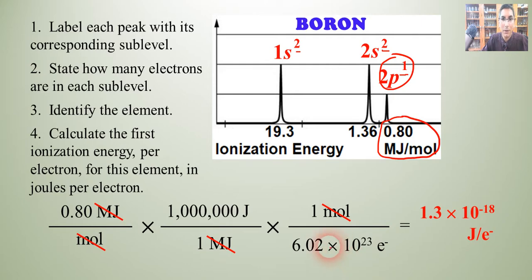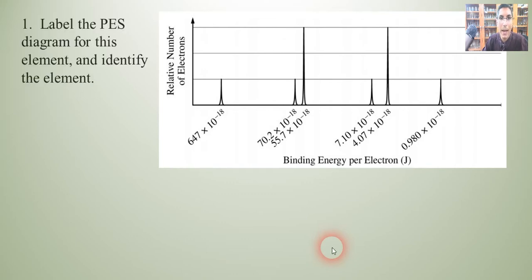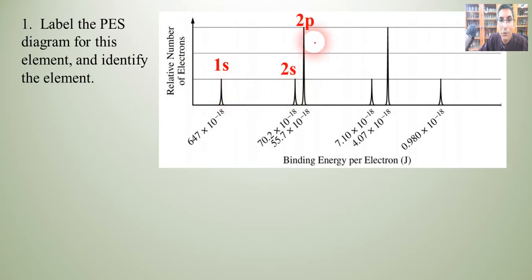Let's take a look at another example. We're going to look at this PES diagram. The first question asks us to label the PES diagram and identify the element. We progress from left to right: the first peak is always 1s, then 2s, then 2p, then 3s, then 3p, then 4s. We can label the sublevels for each one. Remember that 1s is always 2 electrons, and all those with the same height will also be 2.